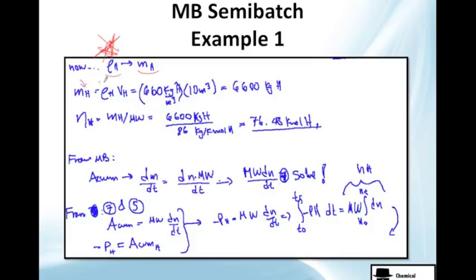So, the mass of hexane equals density of hexane times volume of hexane. I just substitute 660 kg of hexane per cubic meter times 10 cubic meter of hexane. You will have to get rid of 6600 kg of hexane. We have the mass needed to get rid.